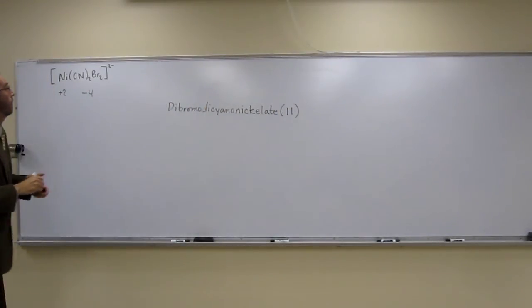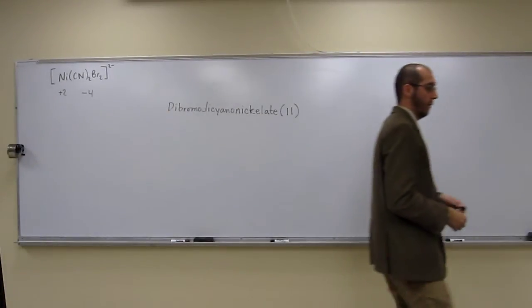So the name of this compound is dibromo, dicyano, nickelate 2, okay? And now it wants us to draw the geometric isomers.